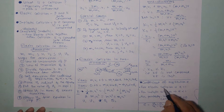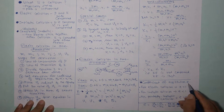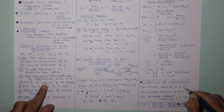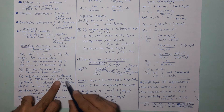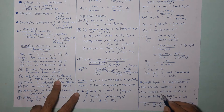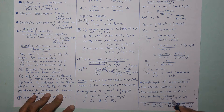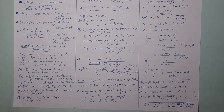Finally, a summary of the coefficient of restitution E: for elastic collision, E = 1; for inelastic collision, E < 1; and for perfectly inelastic collision, E = 0. These are the key concepts associated with elastic and inelastic collisions.